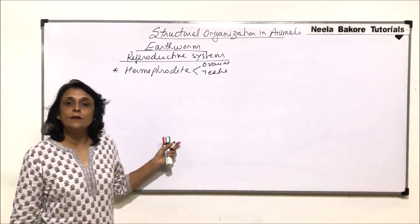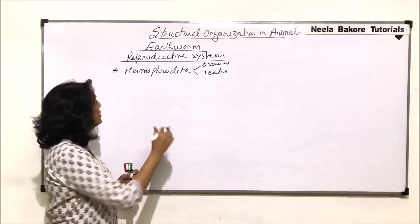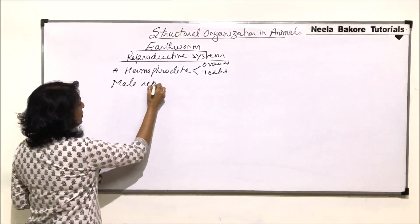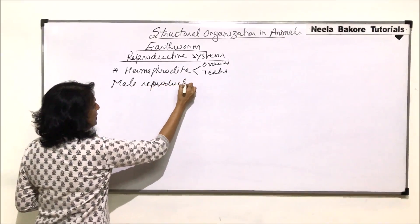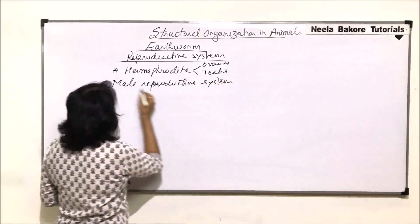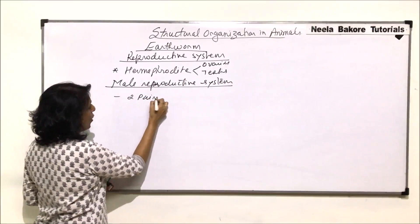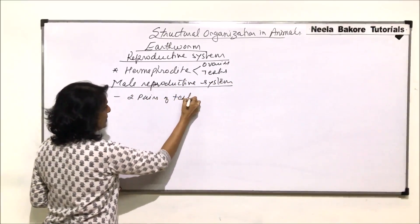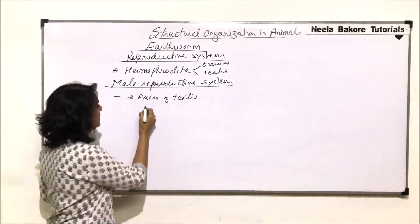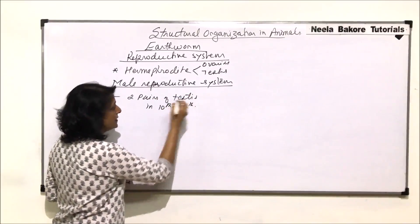Before that, we need to understand the male reproductive system and the female reproductive system. So first, we will talk about the male reproductive system. The male reproductive system is made up of two pairs of testes which are located in the 10th and the 11th segments.